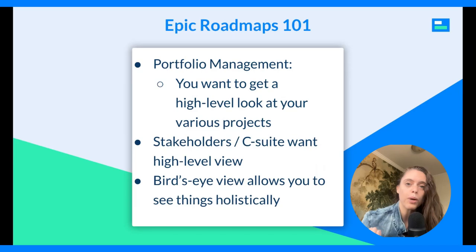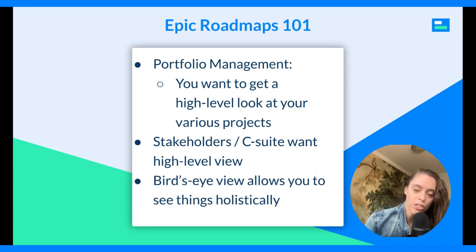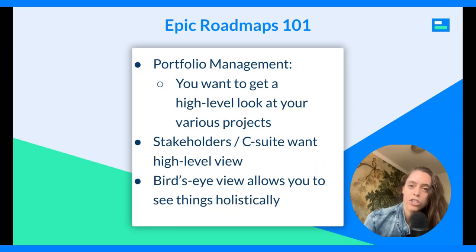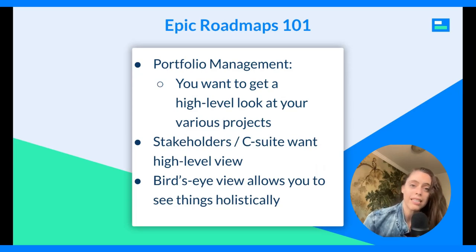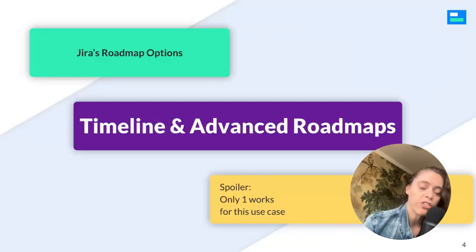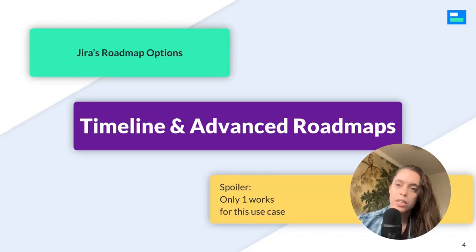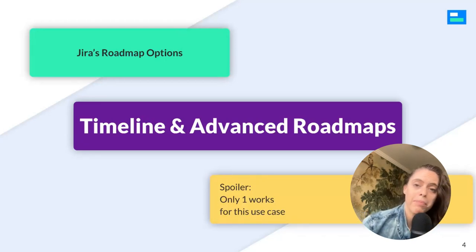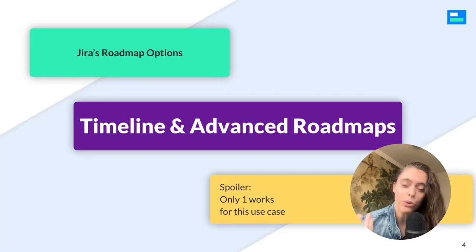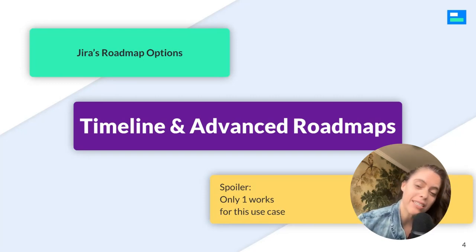Jira has a very hierarchical way of structuring data, and being able to filter away the subtasks, tasks, and smaller issues, and just focus on the epics, you are able to see things at a holistic level. I'll start by showing you the roadmap options built into Jira — and spoiler, only one of them is actually workable for the Epic Roadmap we're talking about today.